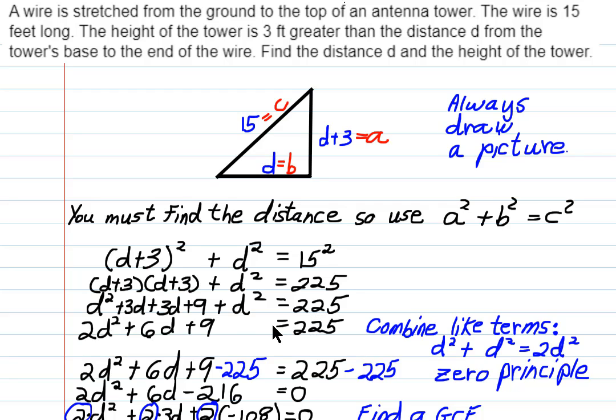Now I combine my like terms. D squared plus d squared is 2d squared. 3d plus 3d is 6d. And 9 is 9 equals 225.